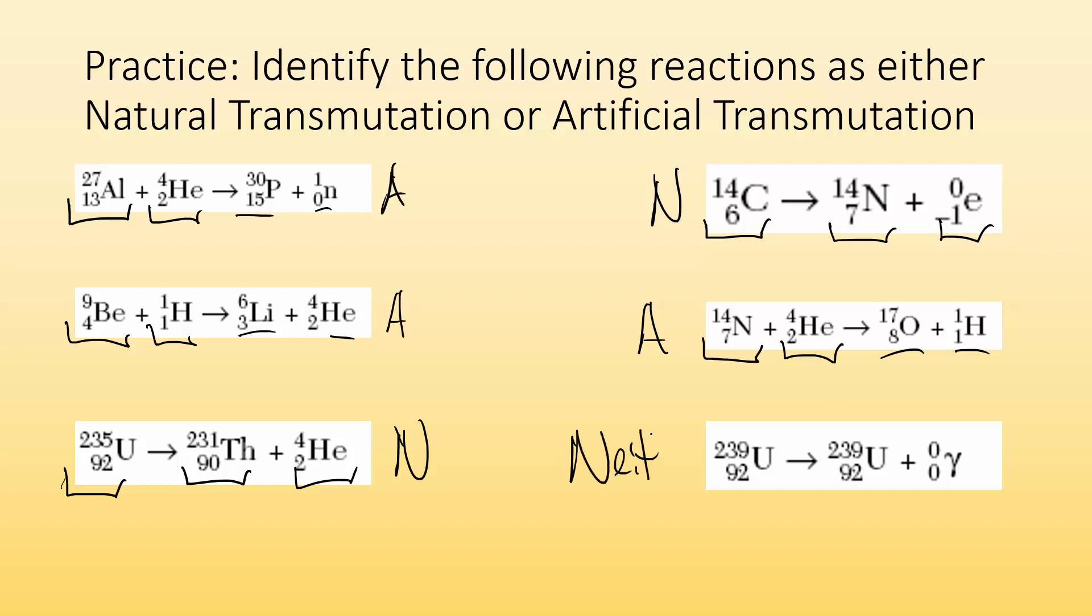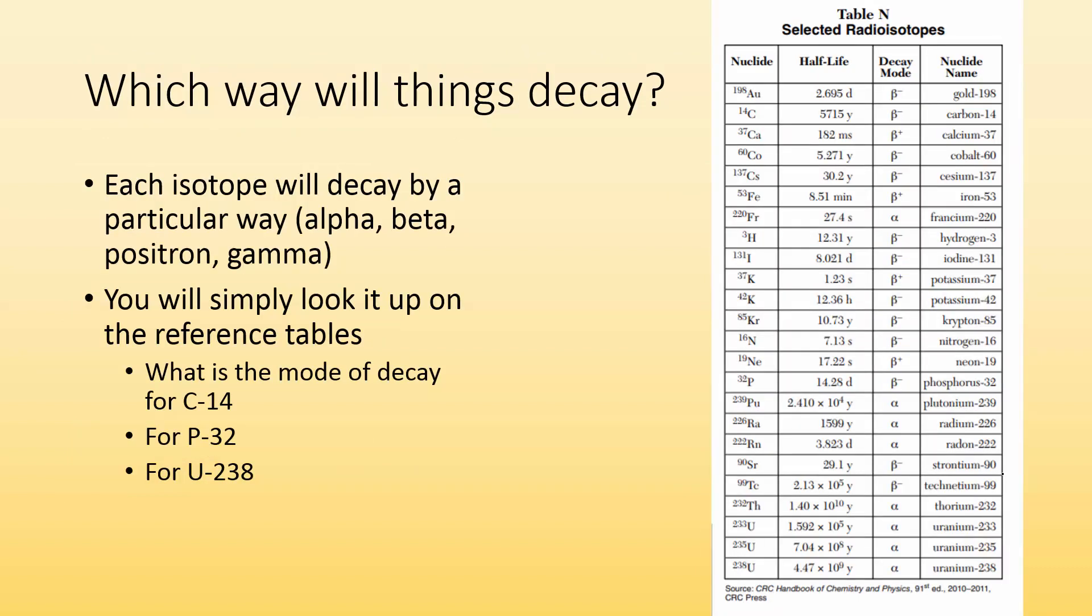And this last one was a trick question. It's neither. This isn't a transmutation. I started with uranium-239 and ended up with uranium-239. Gamma didn't change the atomic number. This is not a transmutation because we didn't get a new element. Not a transmutation if we don't end up with something new.